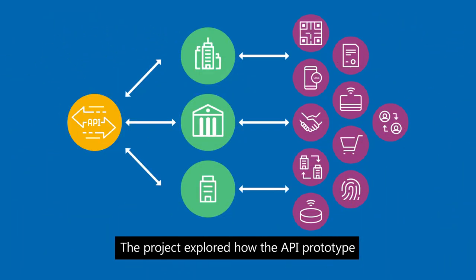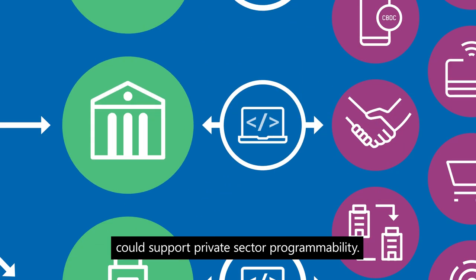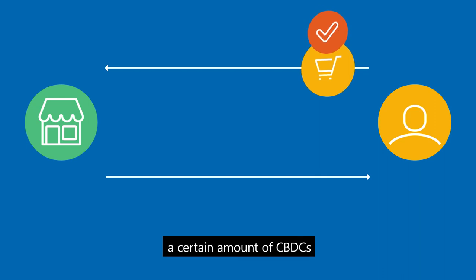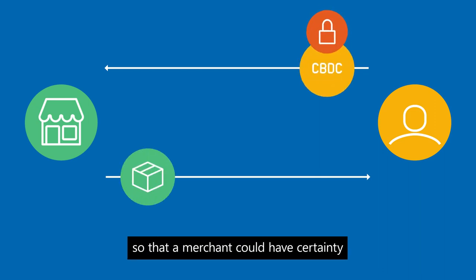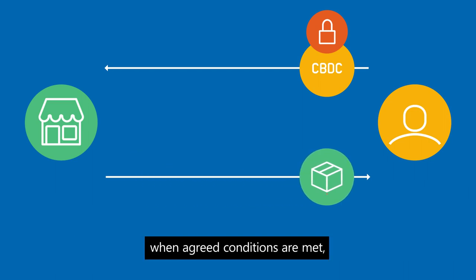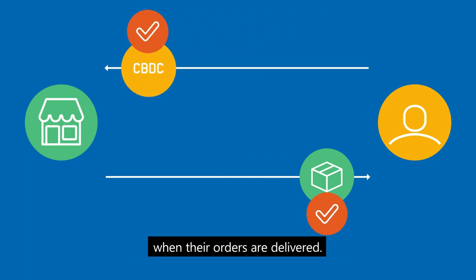The project explored how the API prototype could support private sector programmability. For example, after placing an order, a customer could agree to put away a certain amount of CBDCs so that a merchant could have certainty that the customer will be able to pay. Programmability could also allow payments to be triggered when agreed conditions are met, so that consumers would only be charged when their orders are delivered.